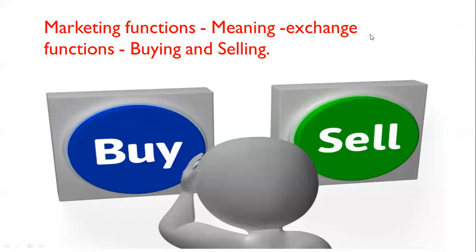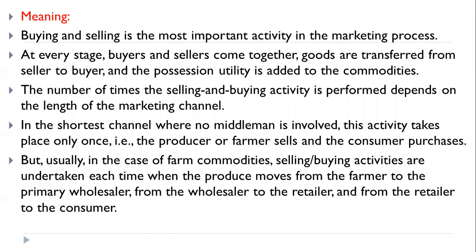Hello students, we continue with the next marketing functions in this lecture, related to the exchange point. The function is called buying and selling. In meaning, buying and selling is the most important activity in the marketing process. At every stage, buyers and sellers come together, goods are transferred from seller to buyer, and the possession utility is added to the commodity.